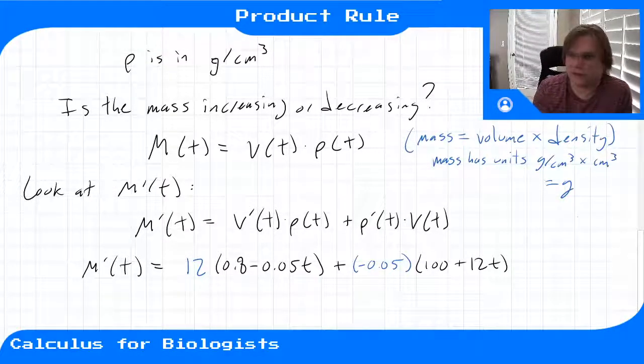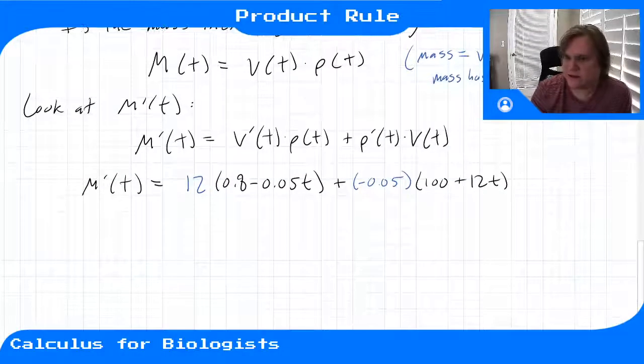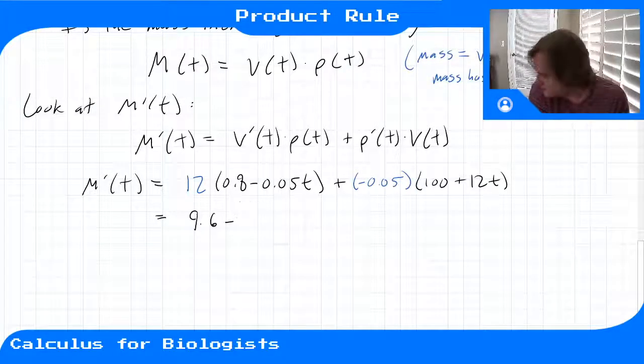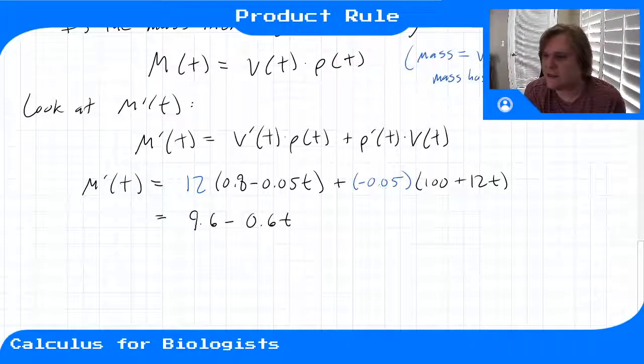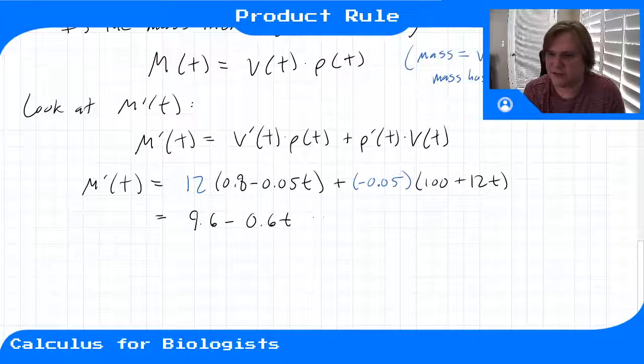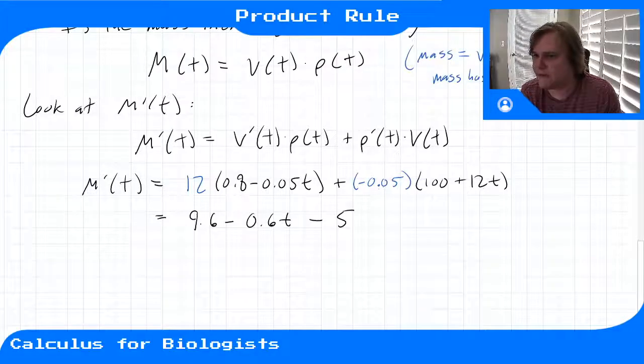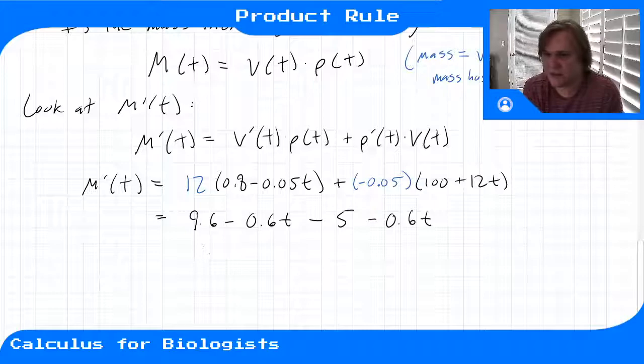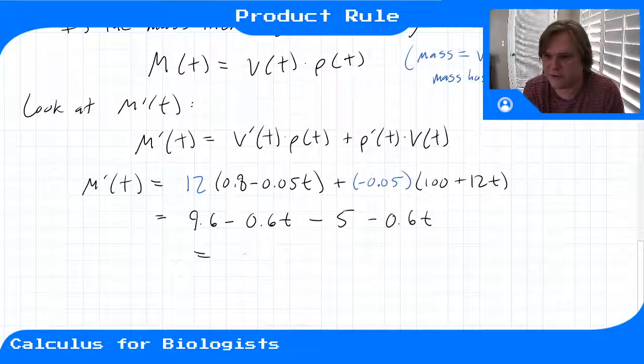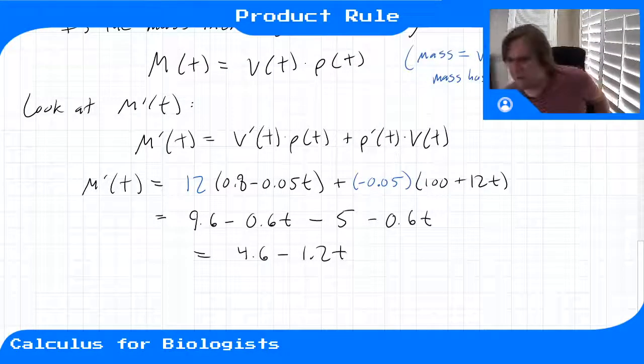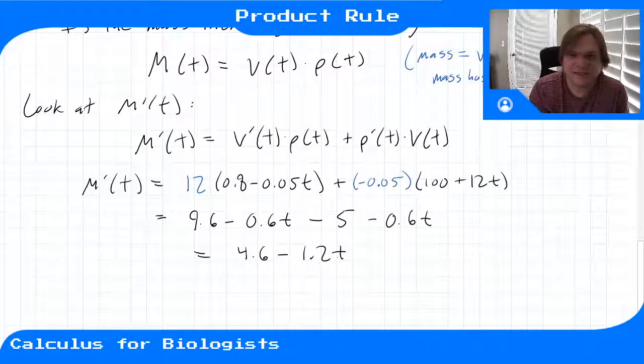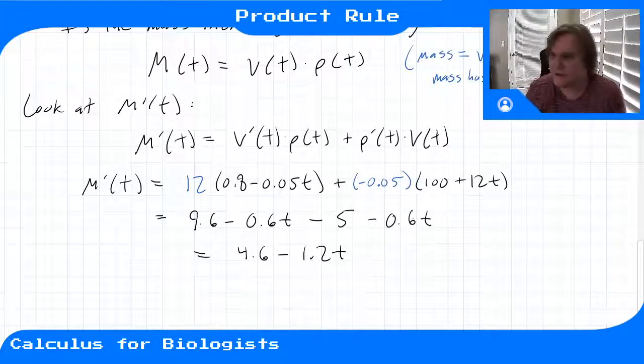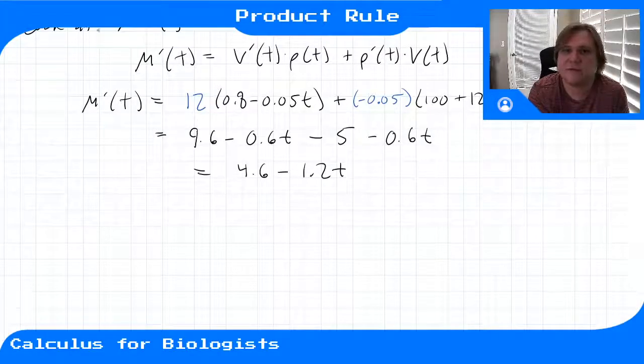Let's factor this out and we'll get a linear equation. If I do 12 times 0.8, I get 9.6. Minus 12 times 0.05 gives me 0.6t. Here, 0.05 times 100 gives me negative 5. And here, negative 0.05 times 12 gives me minus 0.6t. I'll combine all this stuff. So we get 4.6 minus 1.2t. So it has a negative slope for the original function when this part outweighs that part.